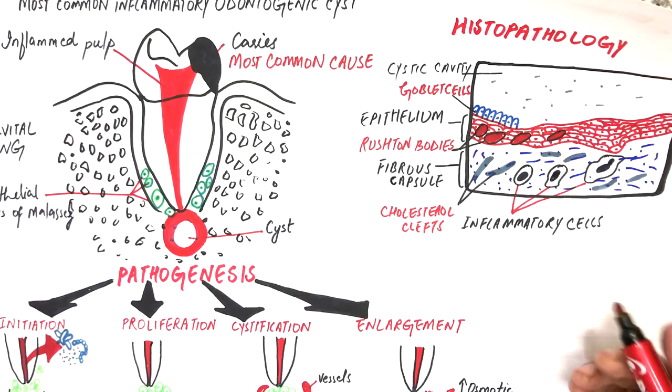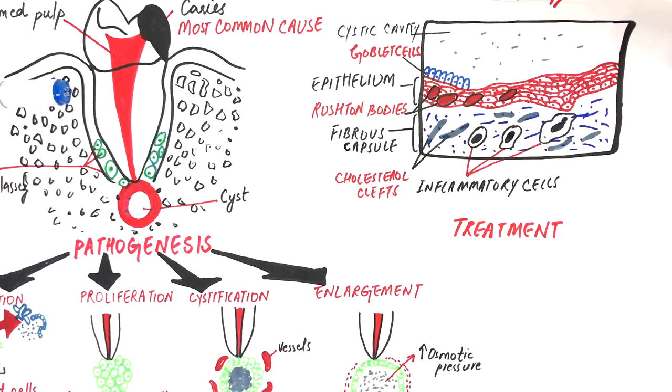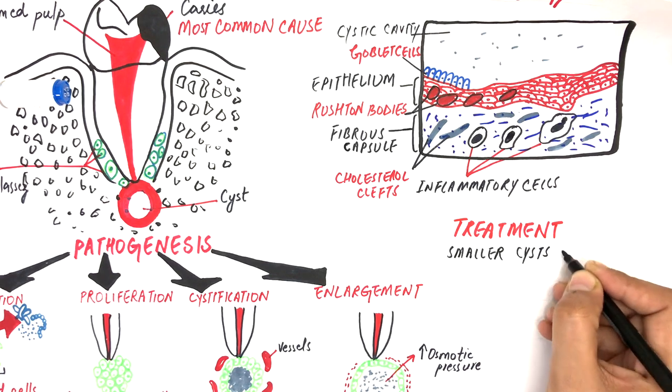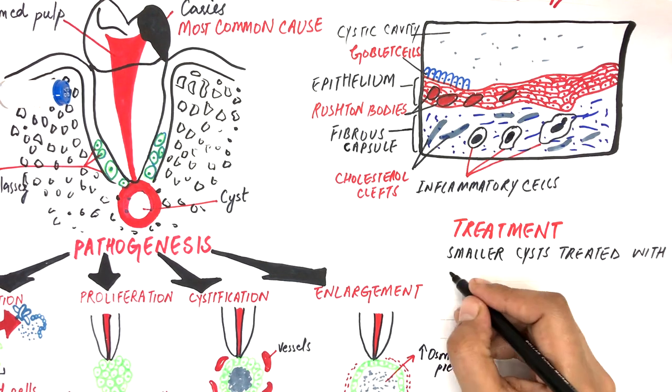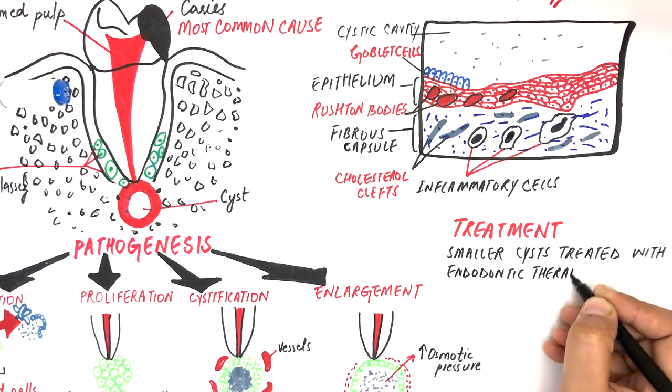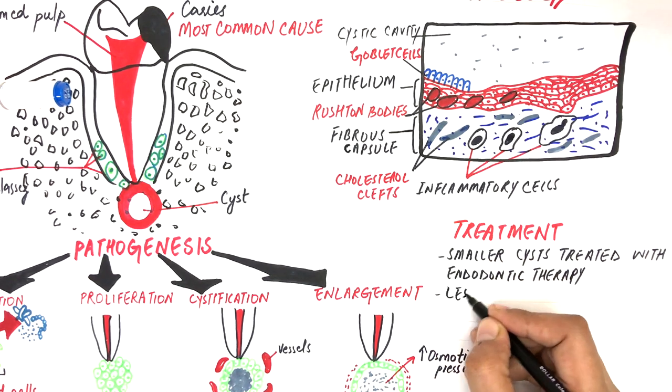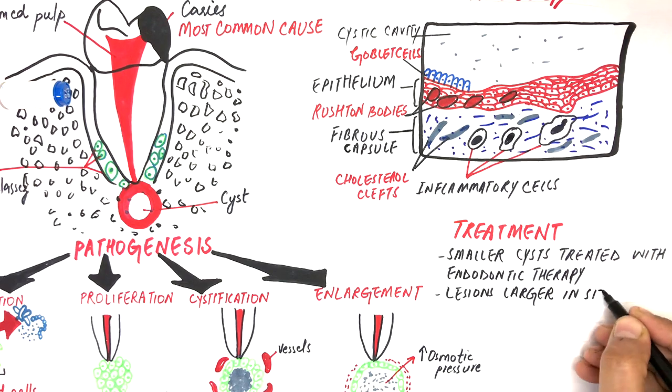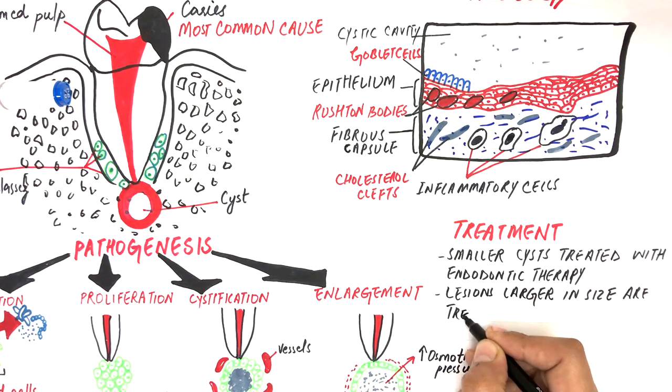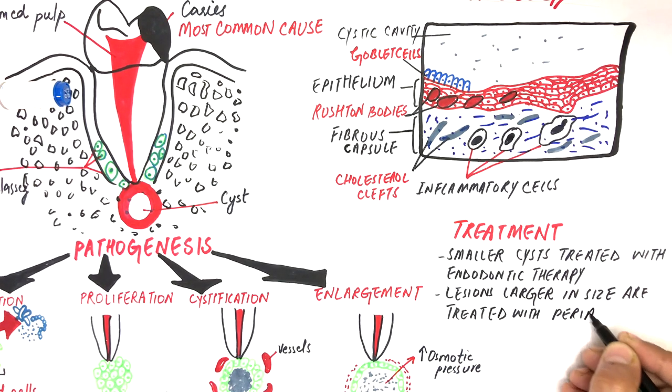Coming to the treatment, small cysts can be treated with non-surgical conventional endodontic therapy. If the tooth does not respond to endodontic therapy, then extracting the tooth becomes the only choice. Lesions larger in size and exceeding 2 cm in diameter are treated with a periapical surgery.